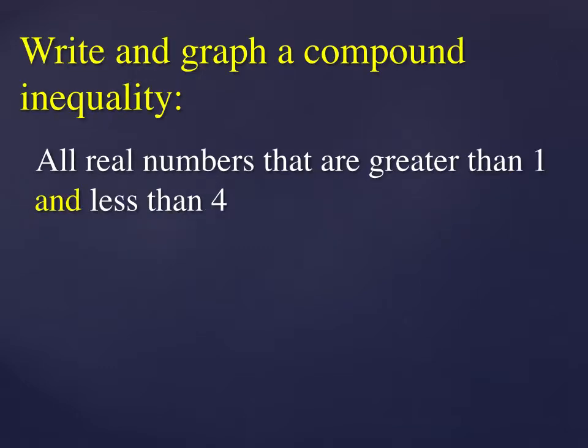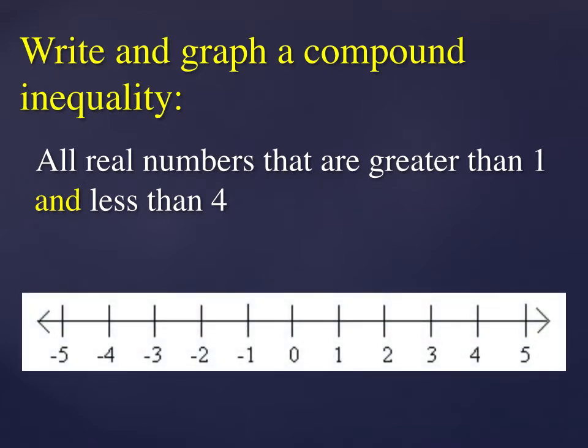First example is to write and graph a compound inequality all real numbers that are greater than 1 and less than 4. Let's have an open circle at 1 because we want numbers strictly greater than 1, but at the same time we want numbers that are strictly less than 4. So an open circle at 4 and everything in between. The solution set looks like this graph and these symbols. We say 1 is less than x is less than 4.